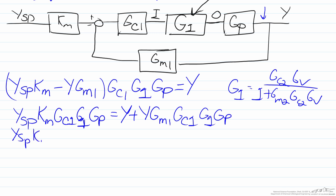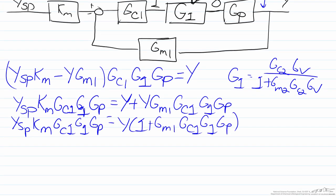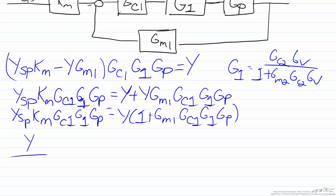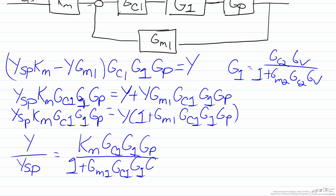So we will factor out the y, and this will leave us with our final transfer function of y over ysp equals Km Gc1 G1 Gp divided by 1 plus Gm1 Gc1 G1 Gp.